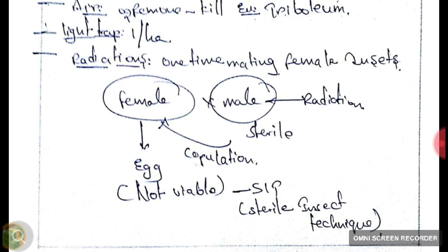Radiation is a very important method for one-time mating female insects. We collect the male insects and expose them to gamma radiation or X-ray radiation to make them sterile. These sterile male insects will mate with female insects, and the eggs laid by the females will be non-viable, controlling the population.